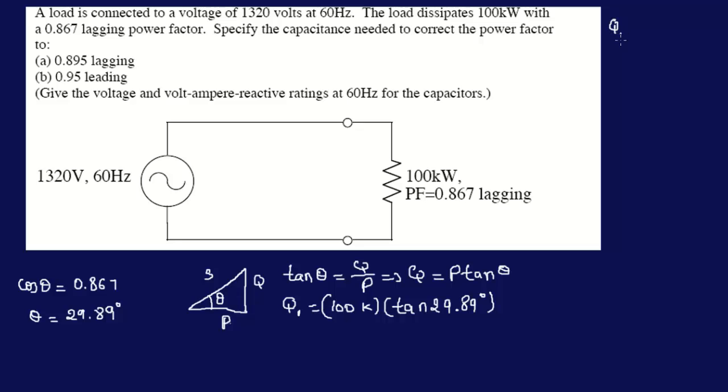Q1 is equal to whatever that gives us, 57.47. So I have J57.87 kVAR. The reactive power unit is kVAR. So we have that one for the 0.867 lagging power factor.